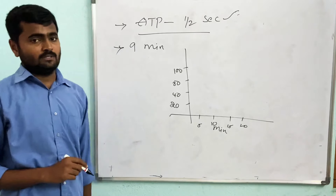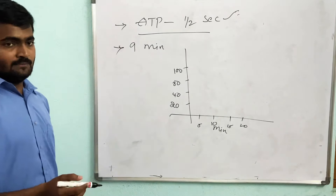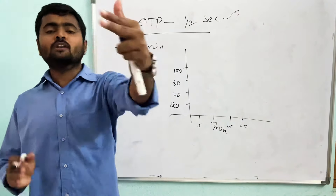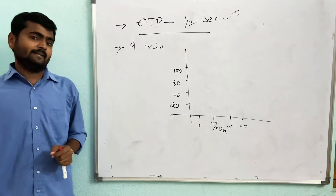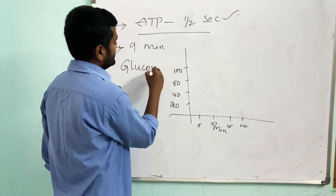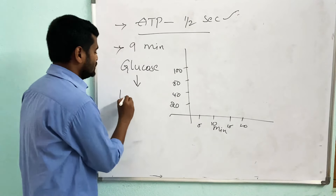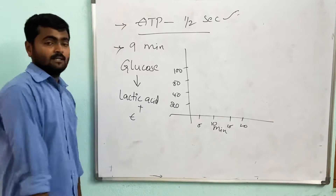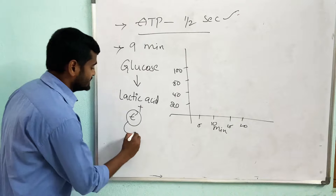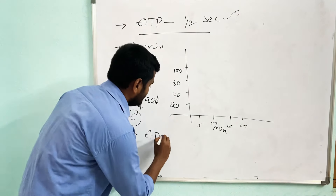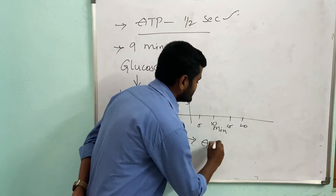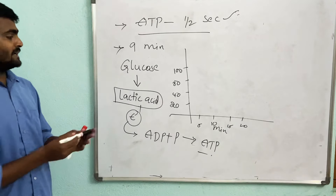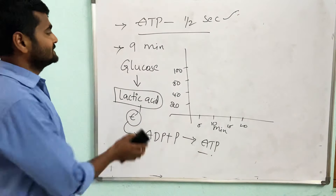When doing vigorous exercise, athletes run with little extra breath and only start panting after reaching their goal. During running there is no oxygen available, so glucose breaks down into lactic acid and releases a very small amount of energy. This energy is used to form ATP by bonding ADP to phosphate, and these ATPs are utilized throughout the race.